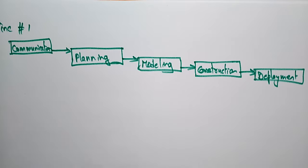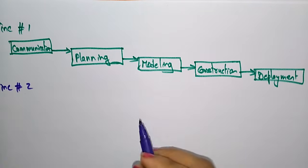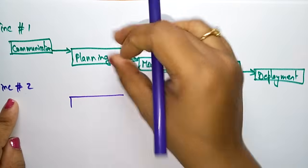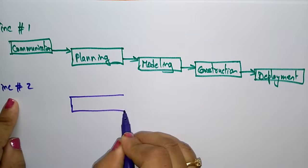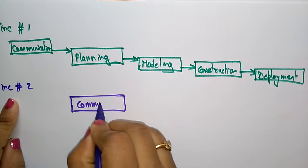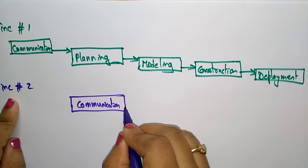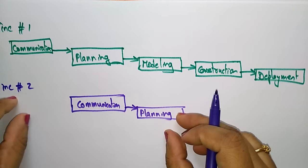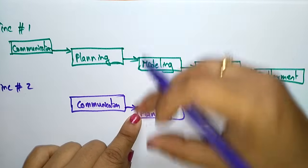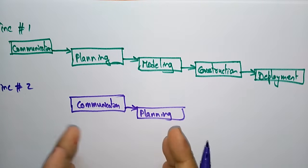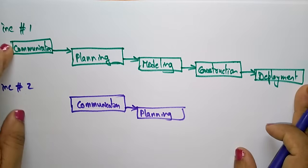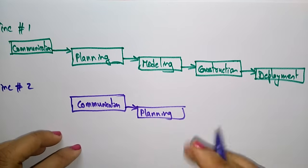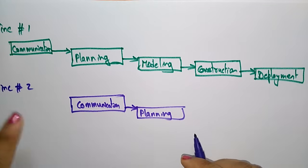Next, they take increment two. Another team takes the next module and starts with communication with the customer, then planning that module. When the second team is in the planning stage, the first team is already in the modeling stage — because everything is independent, there is no dependent relationship between modules. Once communicated and successful, the product is deployed.